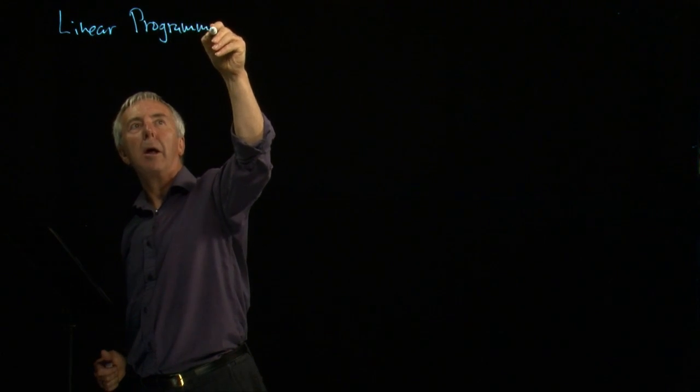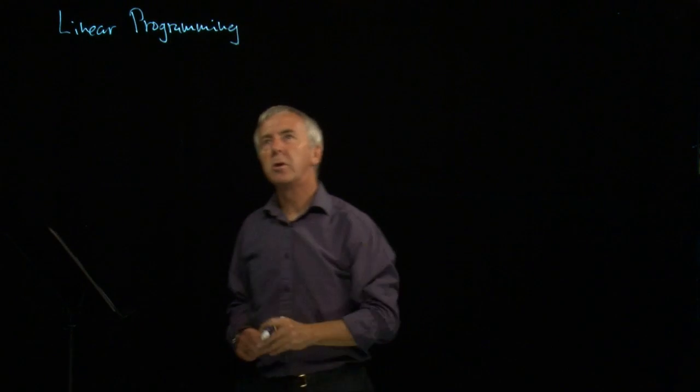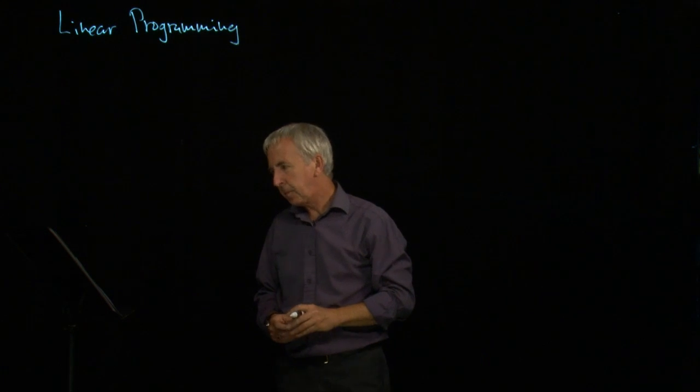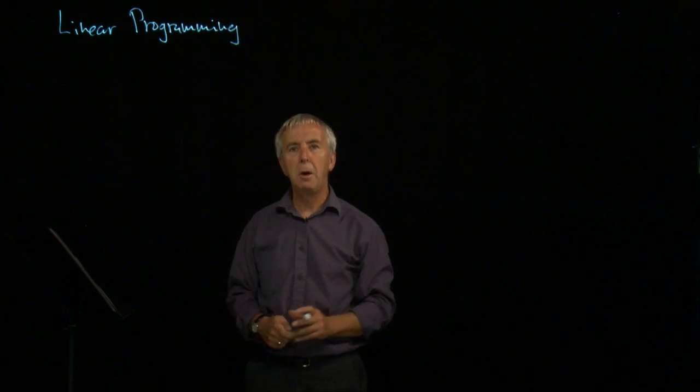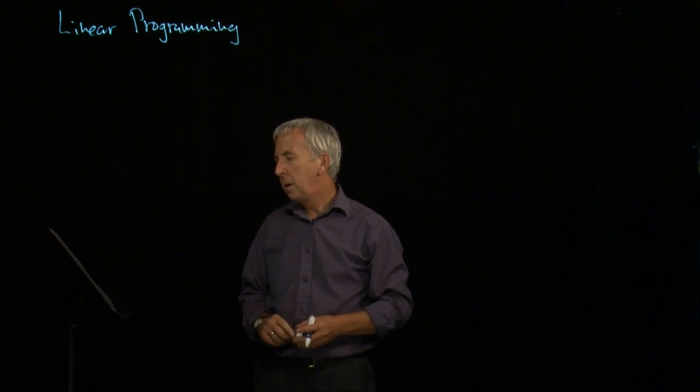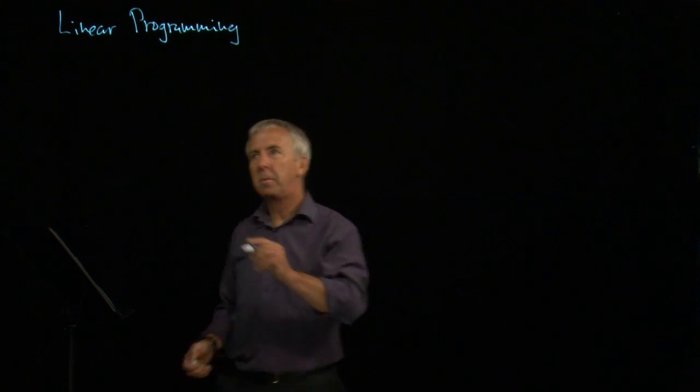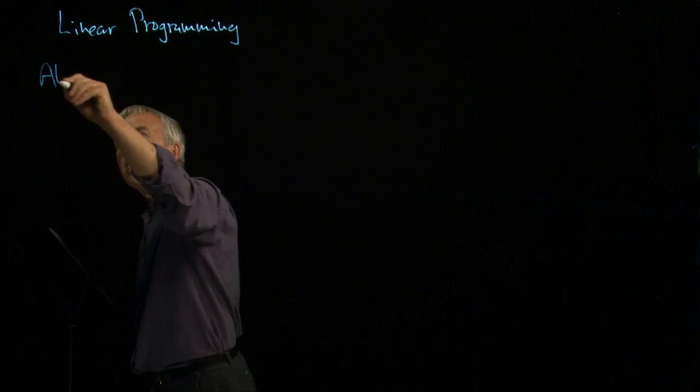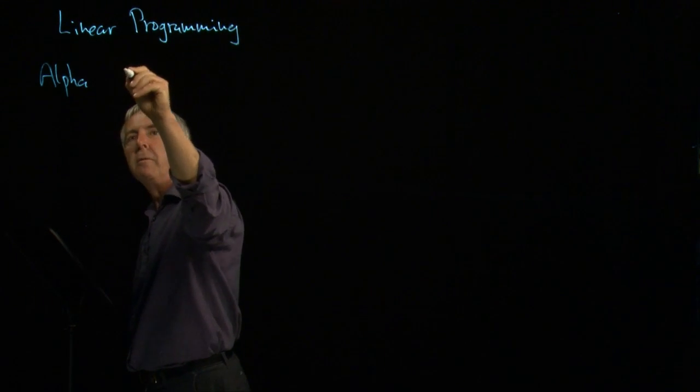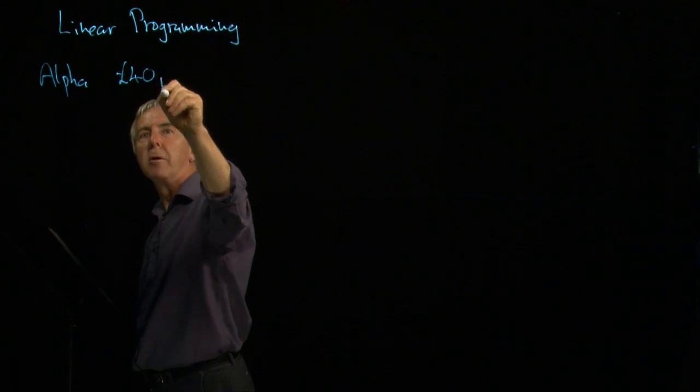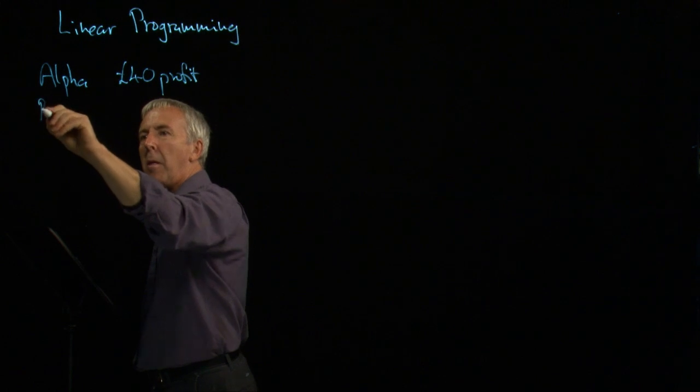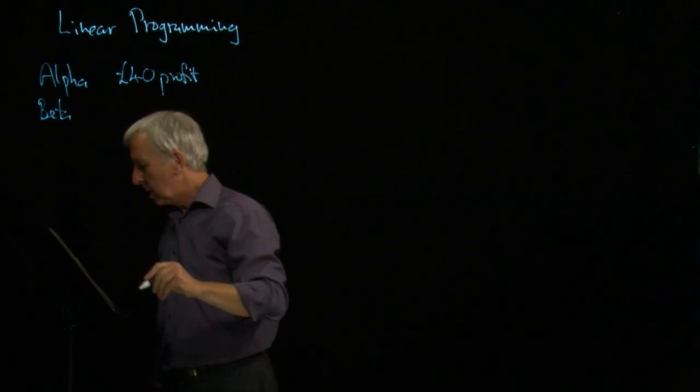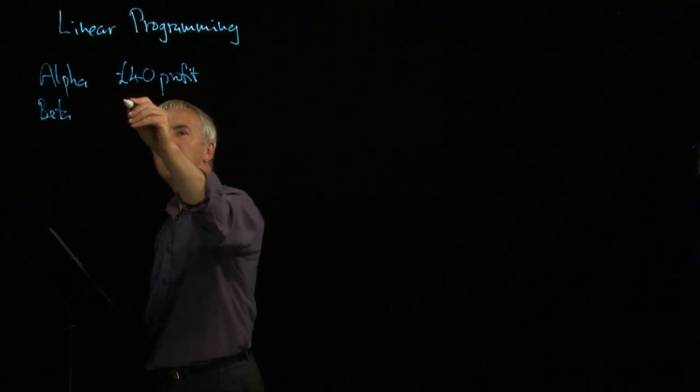So let's use an example to see how this works. Let's suppose we've got a company which is making two different styles of microwave oven, the alpha and the beta oven. The alpha sells for 40 pounds profit, whereas the beta sells for slightly more, 50 pounds profit.